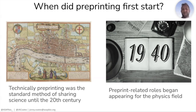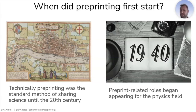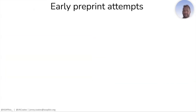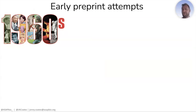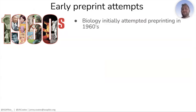Another potential starting point for preprinting is around the 1930s and 1940s. During this period, particularly in physics, a lot of preprint-related activity began to appear, with various initiatives sharing work prior to peer review. For the most part, this was unofficial. This is why, when talking about the beginnings of preprints, I focus on the early preprint attempt in the 1960s, which is especially true for biology.